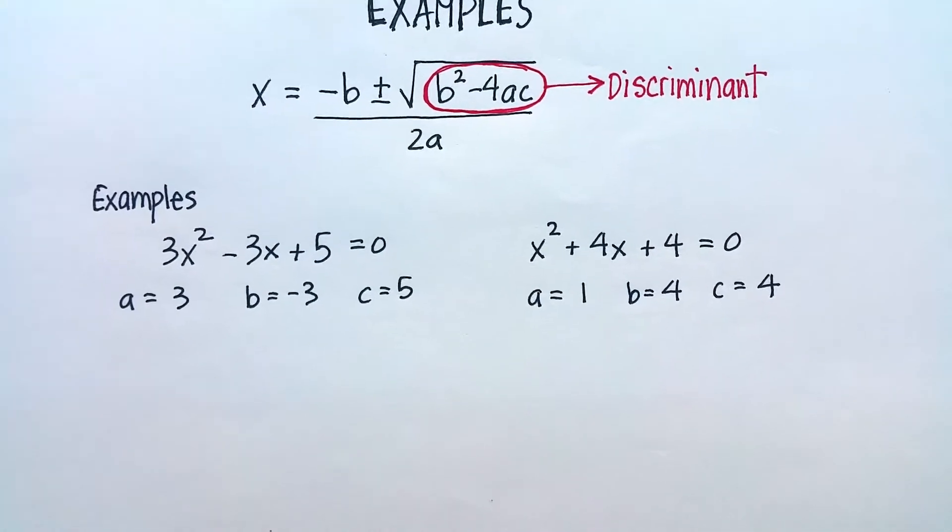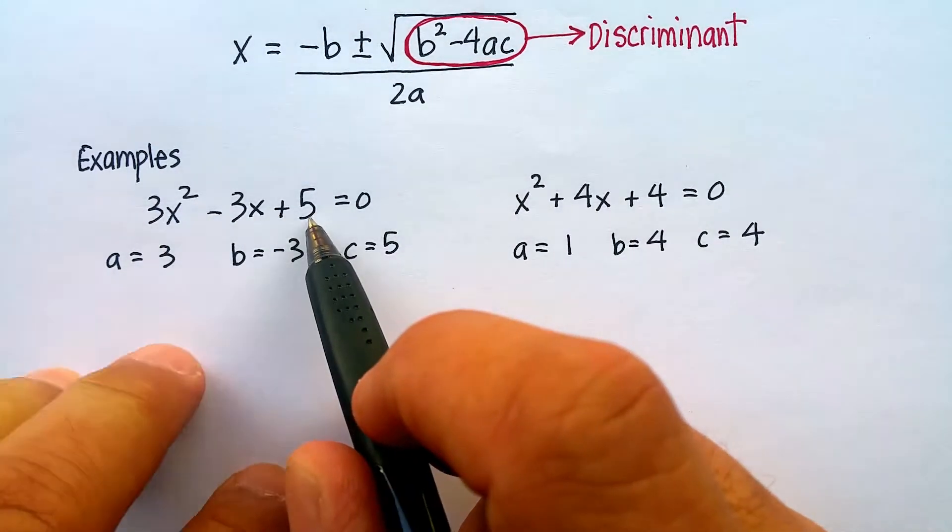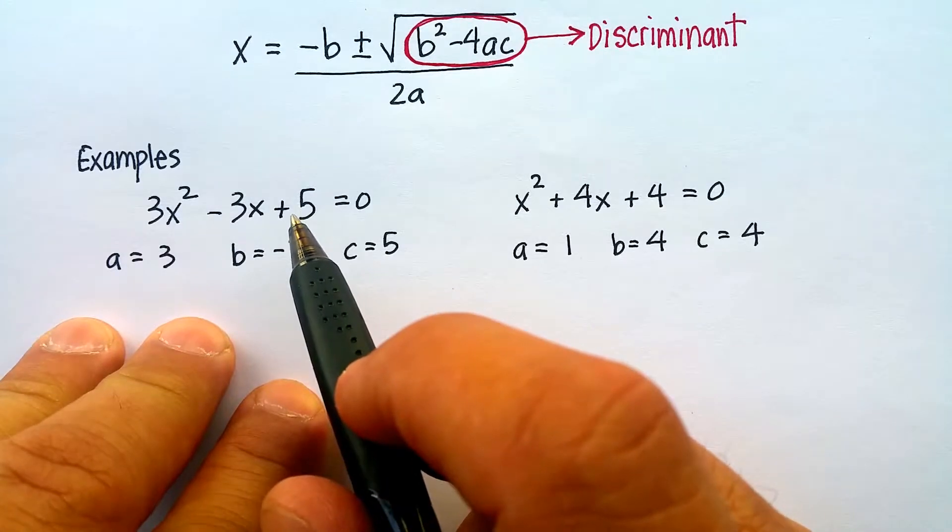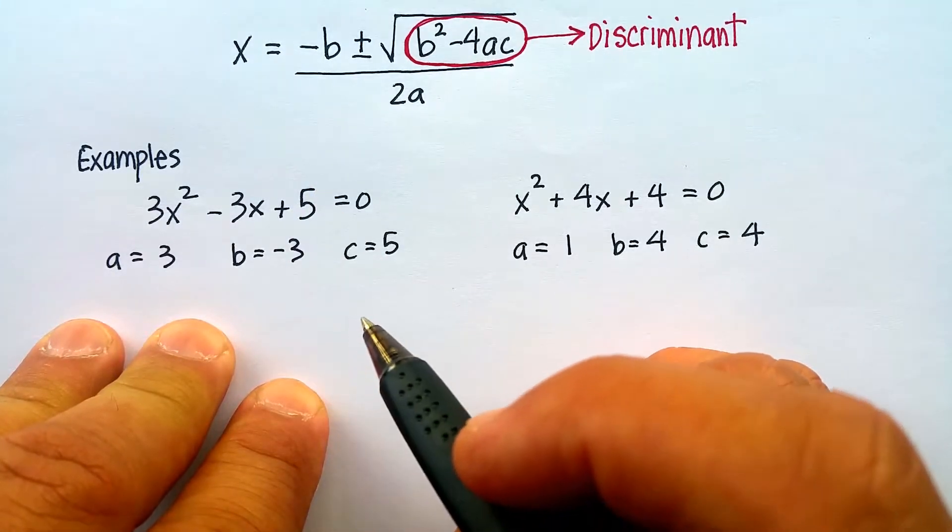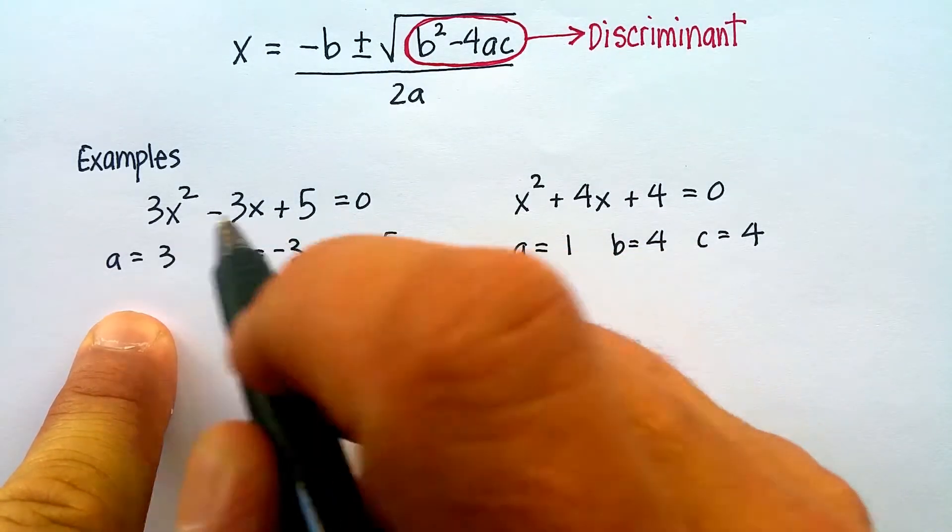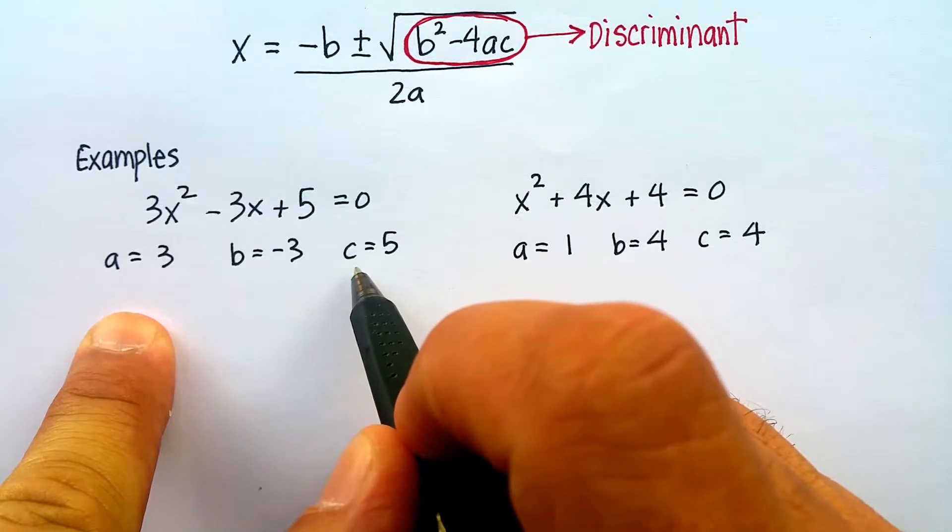So here we have 3x squared minus 3x plus 5. Will this cross the x-axis once, twice, or not at all? Will I have real roots or imaginary roots? So writing in standard form, I get my a as 3, b as negative 3, and c as 5.